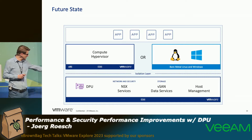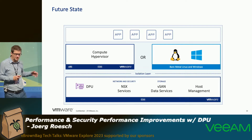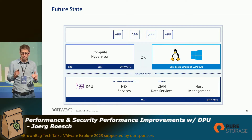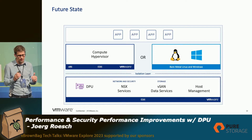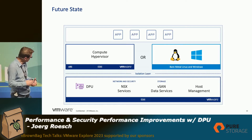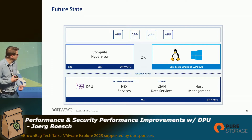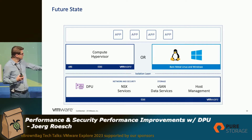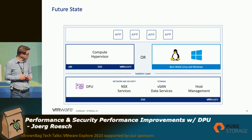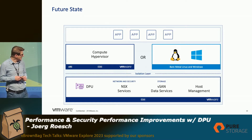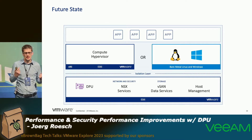Roadmap: currently what we are supporting is NSX services offloading and acceleration to the DPU. On the roadmap we want to have storage — vSAN on the DPU — running, and in the future bare metal as well.